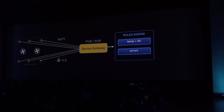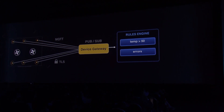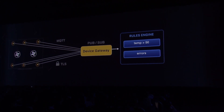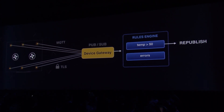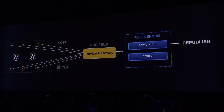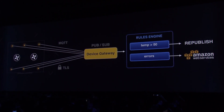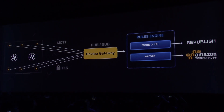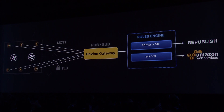At any time, you can add additional rules into the rules engine, meaning you can continually improve the functionality of your devices without having to install software on them. The rules engine can republish messages into new PubSub topics so other devices can consume them — for example, a fan which can activate to bring down temperature. It also orchestrates and sends information to a wide range of AWS services.